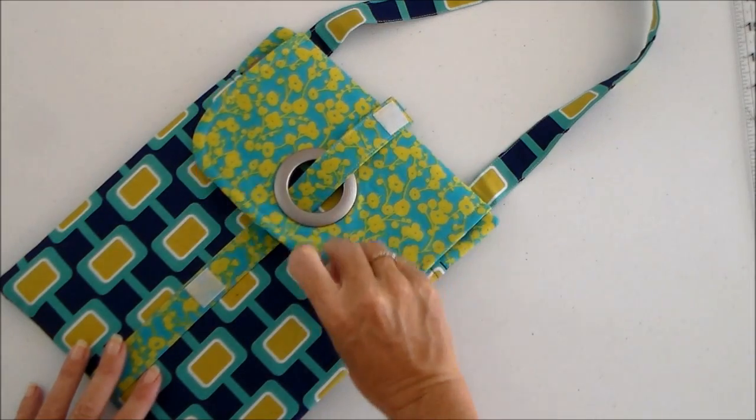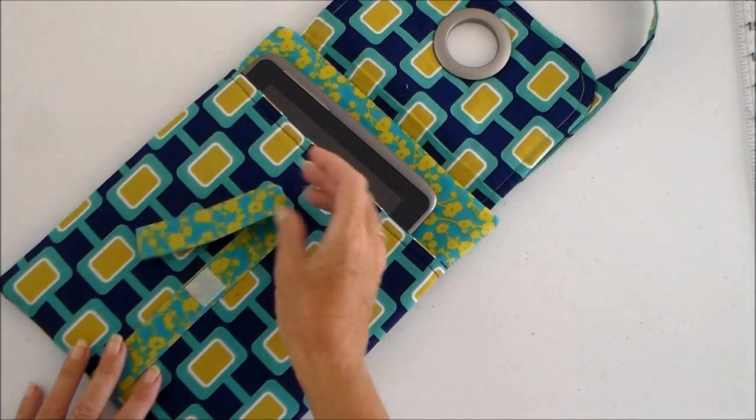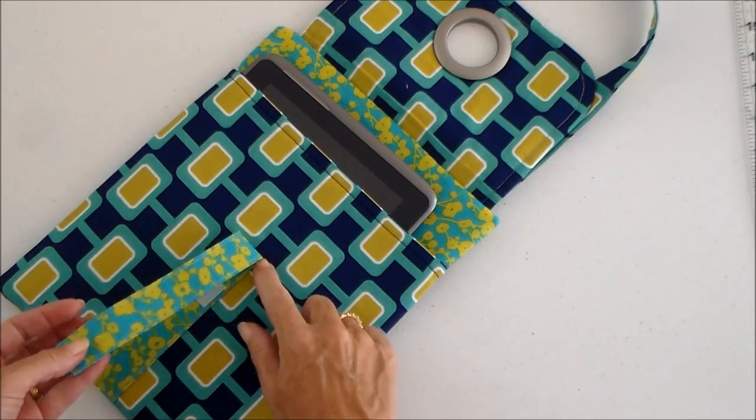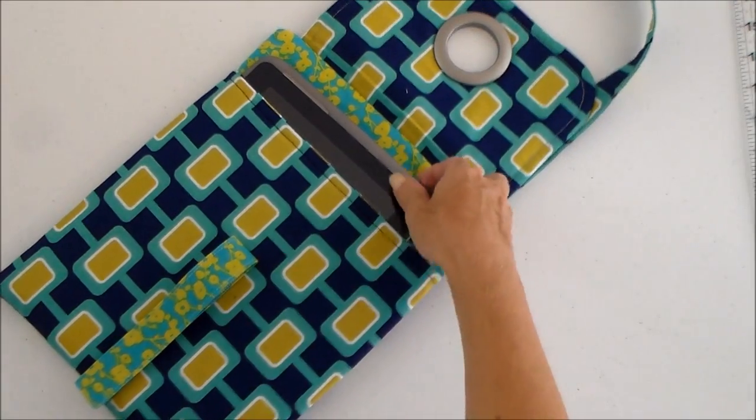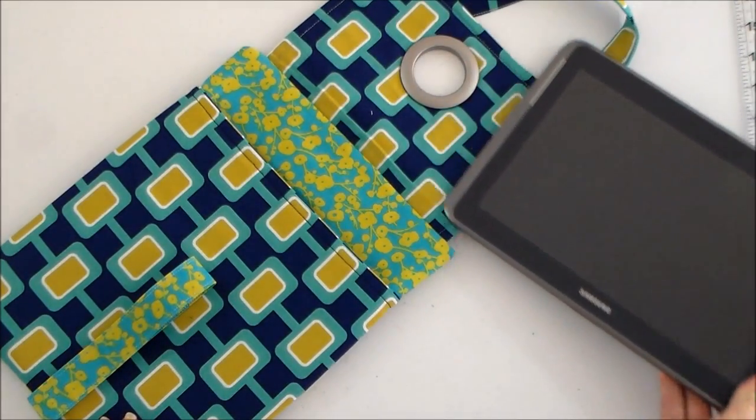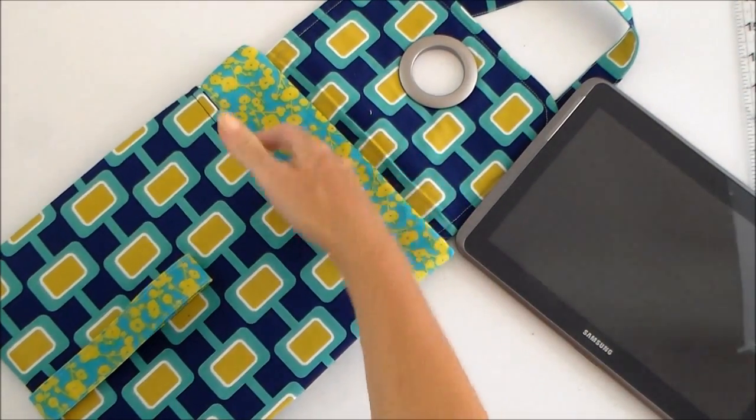So if we open up the strap, the flap comes open. The strap is sewn part way up the front of the bag just here so it's not flopping around or getting in your way. And inside we've got a padded pocket at the front here.